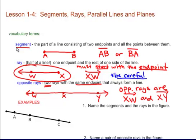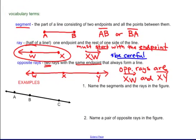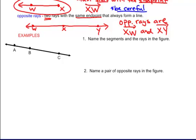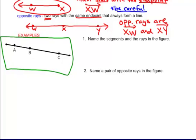This is how we name segments, rays, and opposite rays. I'm going to go over a couple of examples with you to make sure you understand this. I'm going to use a picture provided. I want to be able to name the segments and the rays in the figure. I'd like for you to pause it and try to do it on your own, then compare your answers with mine. Otherwise, I'm about ready to answer the question.